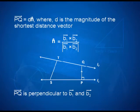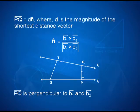Vector PQ is perpendicular to both L1 and L2. In magnitude it is d units — the shortest distance we are searching for. The direction of PQ is the same as unit vector n-cap, which is perpendicular to both B1 and B2, the vectors defining the two lines. We know that the cross product of B1 and B2 gives the direction perpendicular to both. Therefore, the unit vector n-cap equals B1 cross B2 divided by the magnitude of B1 cross B2.